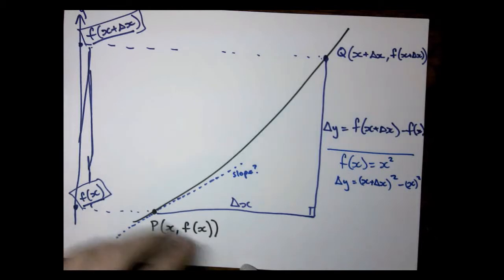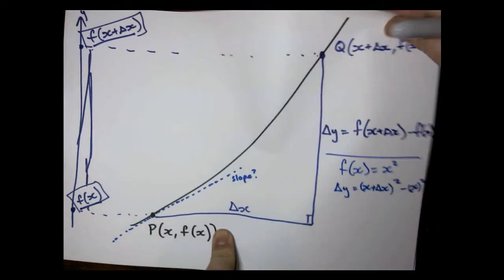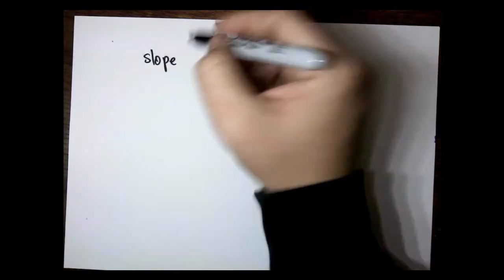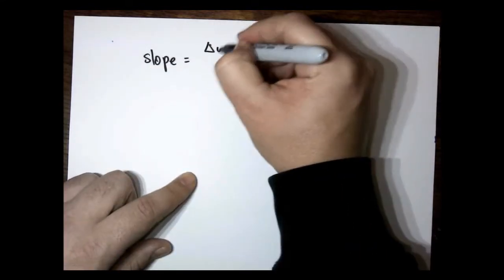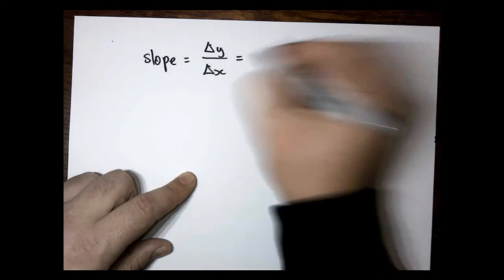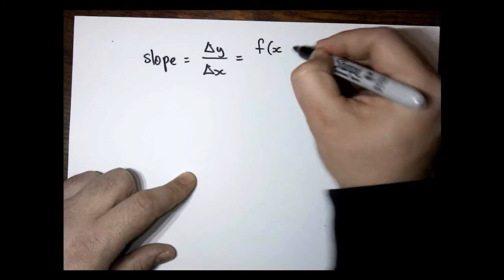So we've got an expression for our change in y over our change in x. We just then need to look at our slope. Change in y over change in x, and that's given by this one here.